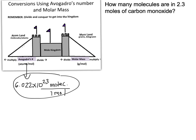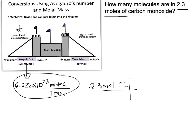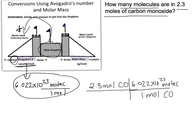If we look at the problem we've been given, it asks us to calculate how many molecules — so we know we're going to be ending up in atom land — and we look at what we've been given. So we've been given 2.3 moles of carbon monoxide. What we've been given always gets put in this first box here: 2.3 moles of CO. We want to go from moles into molecules, so in order to get out of the kingdom, we know we're going to be using multiplication, multiplying by Avogadro's number: 6.022 times 10 to the 23rd molecules per one mole of CO.